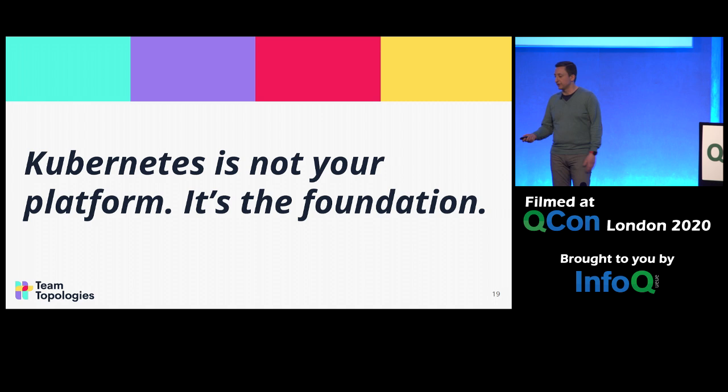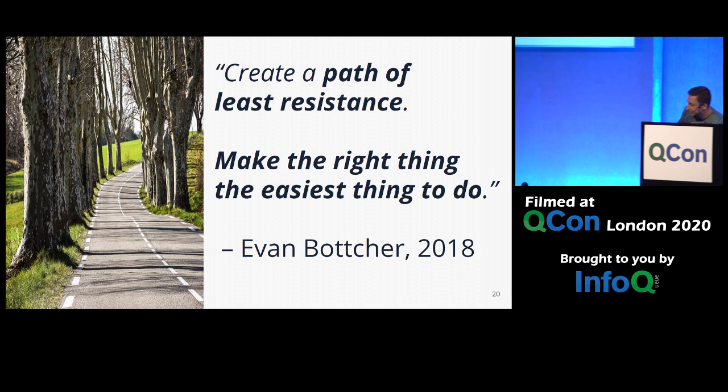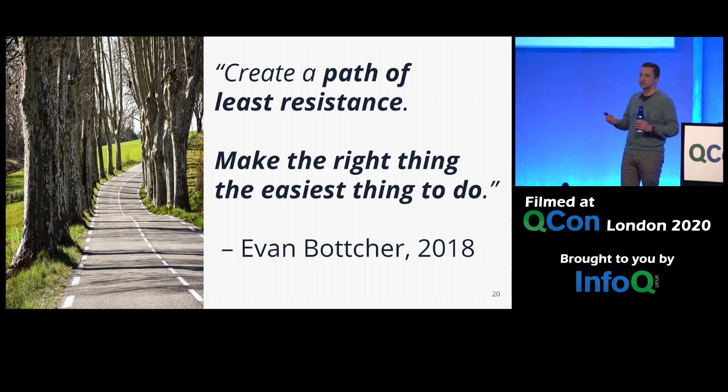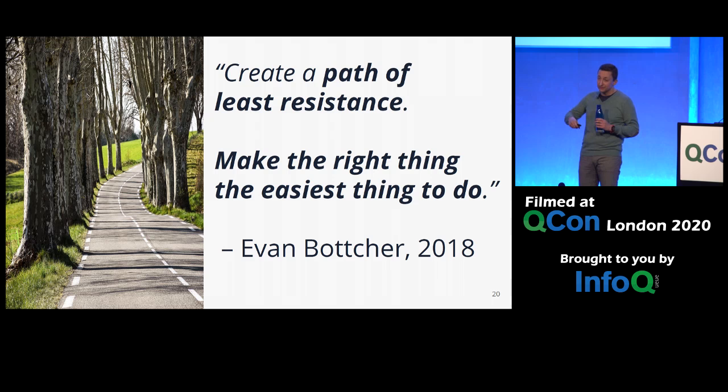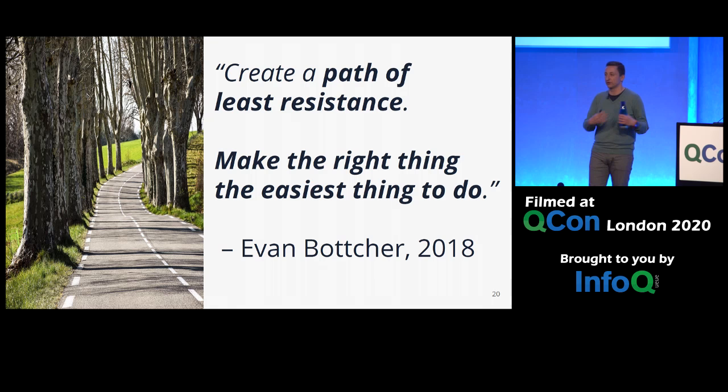A good platform, as Evan Butcher says, should pave the road — create a path of least resistance and make the right thing the easy thing to do. But what the right thing is depends on your context. It's not that whatever Kubernetes does is the right thing. It depends on the teams that are going to consume the platform, where they're coming from, what kind of help they need.